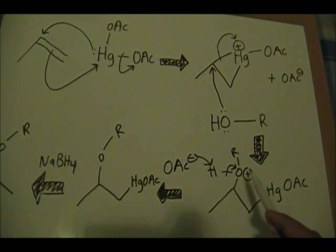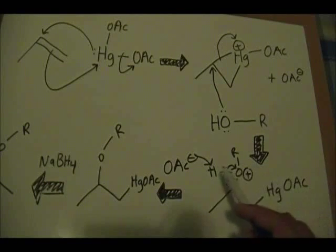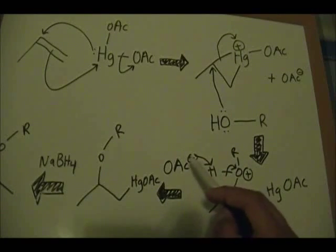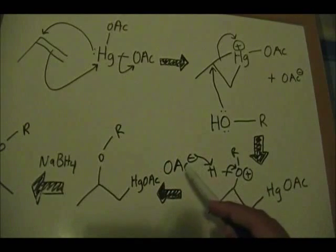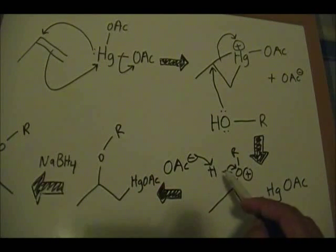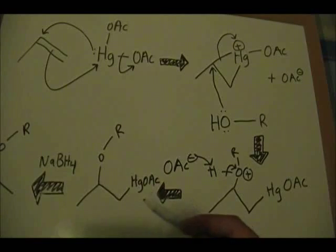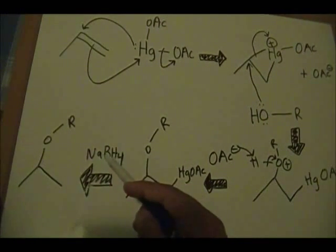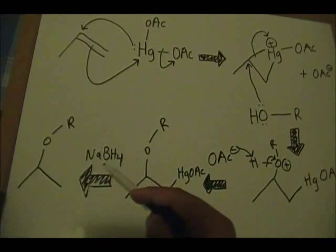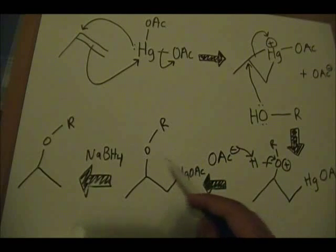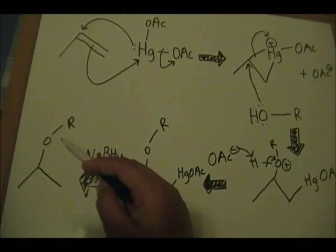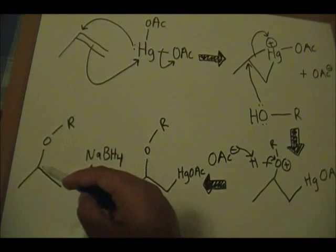Your soon-to-be ether has a positive charge because the oxygen has three bonds on it, and you still have the mercury and acetate attached. To form your ether, the acetate ion from step one makes a bond with this hydrogen, a pair of electrons gets kicked off to the oxygen, and now your oxygen has no charge — it's a neutral, stable oxygen — while the mercury and acetate remain attached. In the final step, you use sodium borohydride, show no arrows, and assume that whole piece gets removed, giving your ether in the Markovnikov fashion on the most substituted carbon.